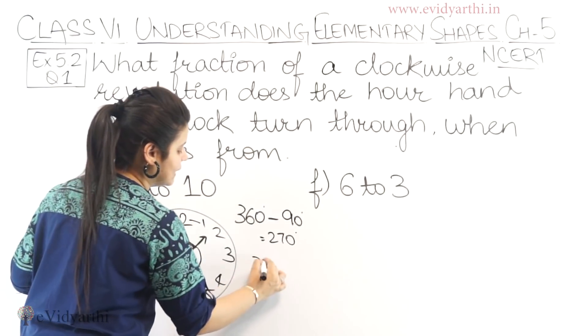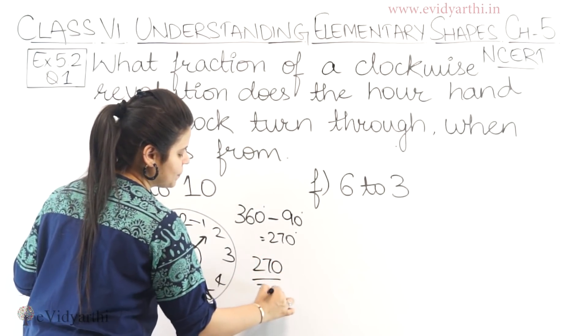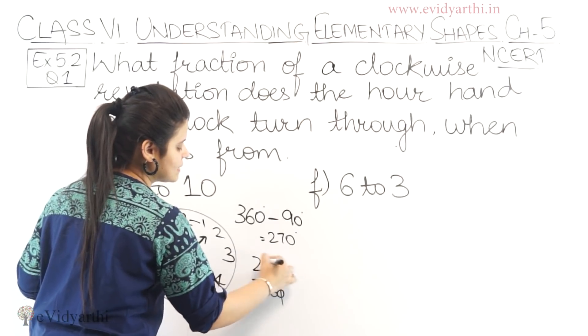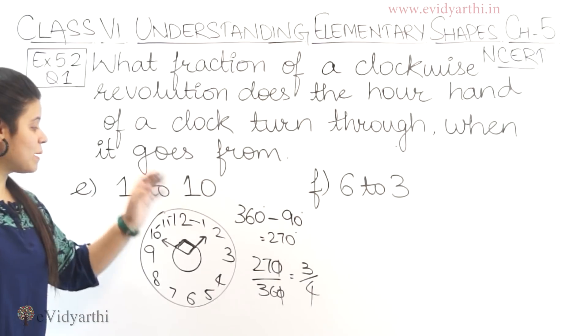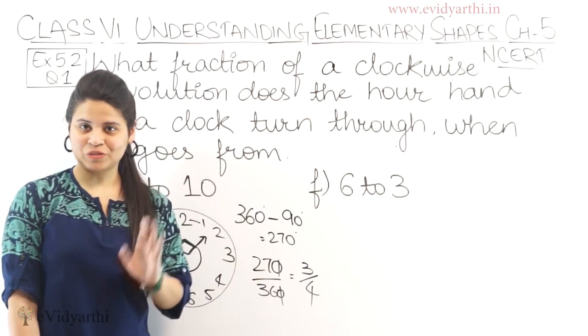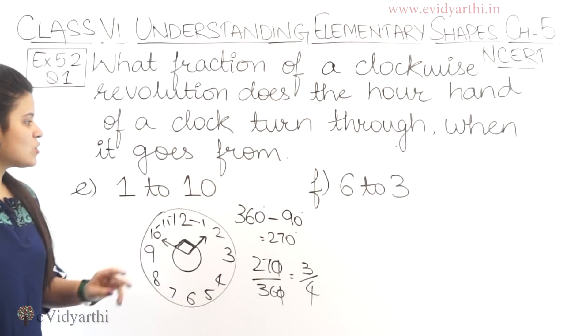Okay? So, we'll find the fraction. 270 upon 360. Zero se zero cancel. This will be three upon four. So, the fraction we get is three upon four. Okay? Coming to the next part.